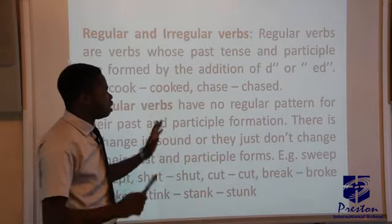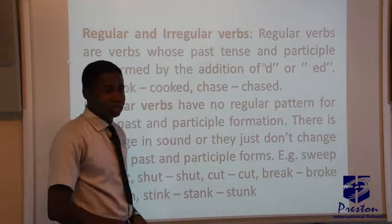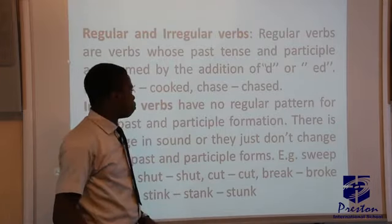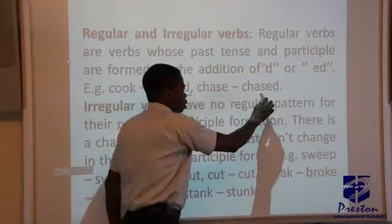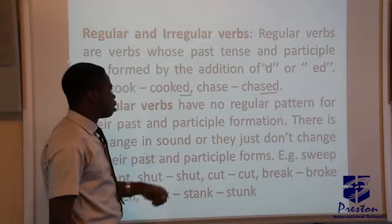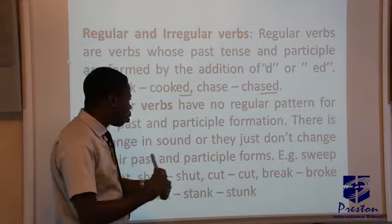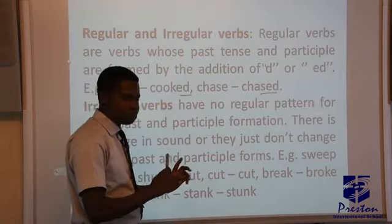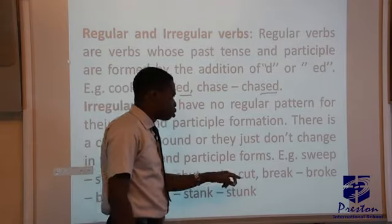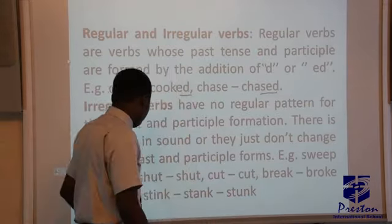Lastly, we have regular and irregular verbs. Regular verbs carry '-d' or '-ed' as their past tense markers — for example, 'bake' becomes 'baked,' 'cook' becomes 'cooked,' 'chase' becomes 'chased.' Irregular verbs completely change their form for the past tense or past participle — for example, 'cut' stays 'cut,' 'break' becomes 'broke,' and 'stink' becomes 'stank.'